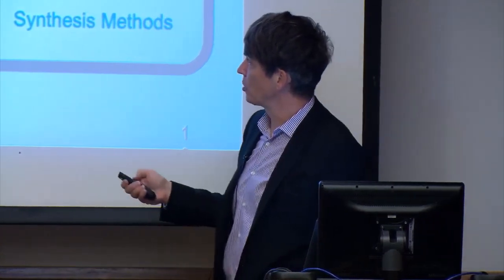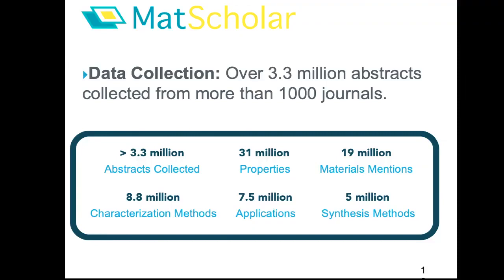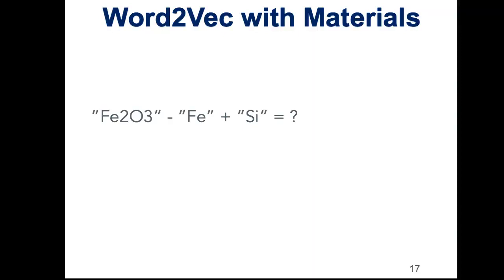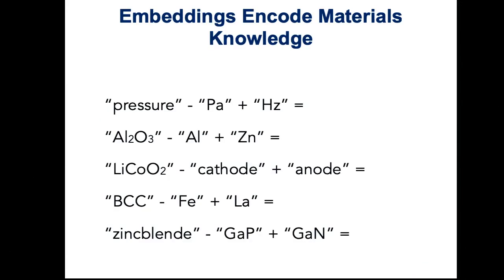So we read a bunch of abstracts — the reason is abstracts are freely available, you don't need licenses. We basically build a vector space for words and try some tests. Iron oxide minus iron, add that to silicon — what should I find? Silicon dioxide. Another: pressure minus Pa plus Hz. It learns that there are abbreviations for things.